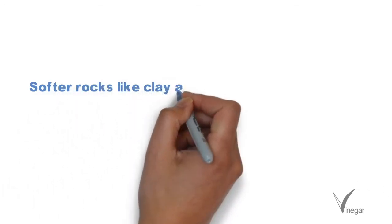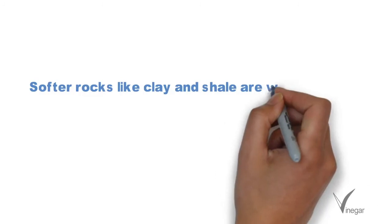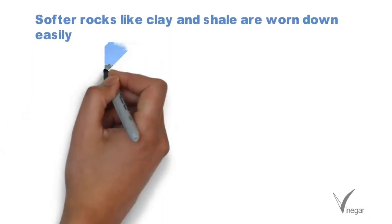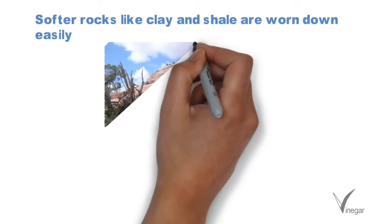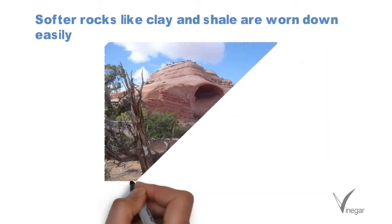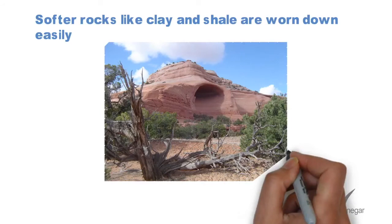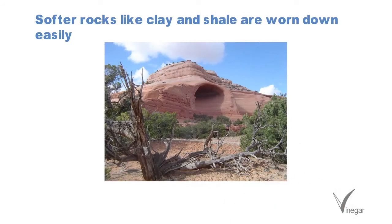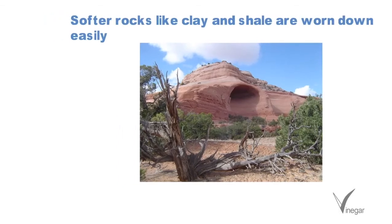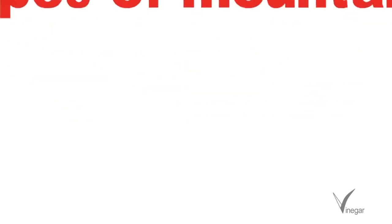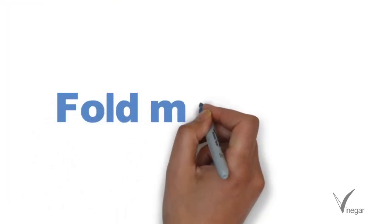Let's talk about the effect of rock type on the landscape. Softer rocks like clay and shale are worn down easily compared to harder rocks like granite. Because of this variation in hardness, our landscape may undergo variation. The softer rocks will get eroded easily and harder rocks will be difficult to erode, creating a different kind of landscape.